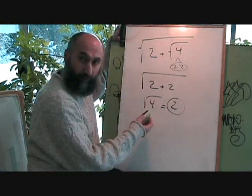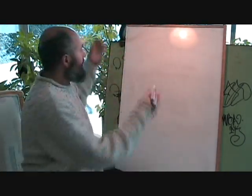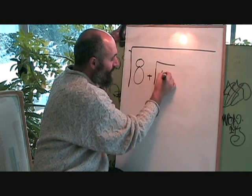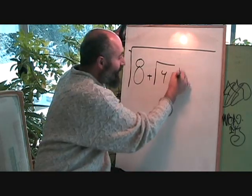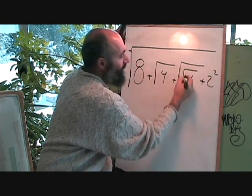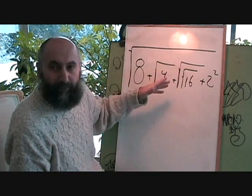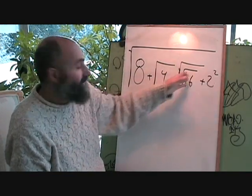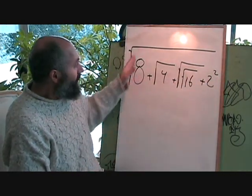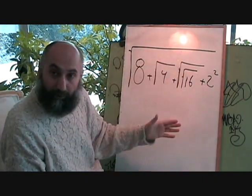Let's do a slightly more complicated one. Let's say they gave you something larger — the square root of 4 plus the square root of the square root of 16 plus 2 squared. So what we have here is multiple root symbols within root symbols, and we've got radicals and exponents. Radicals are just exponents. You deal with each one separately, combine like terms, and then take the square root of the whole thing.